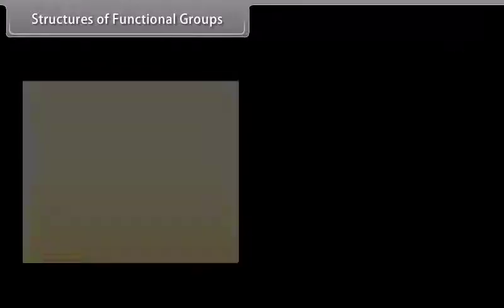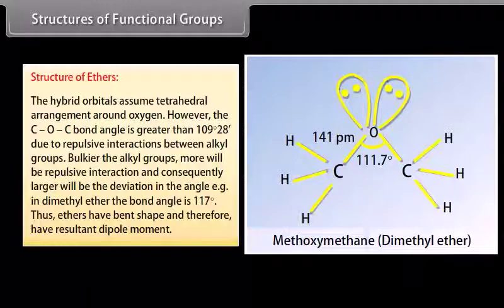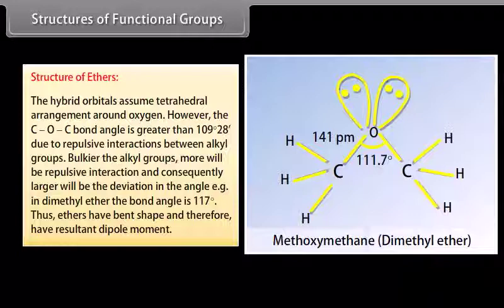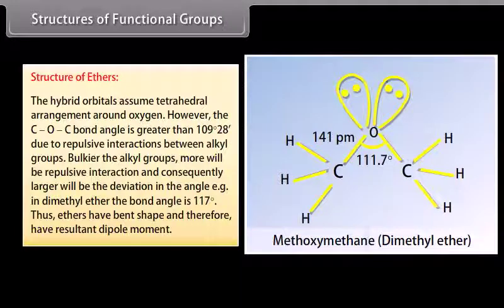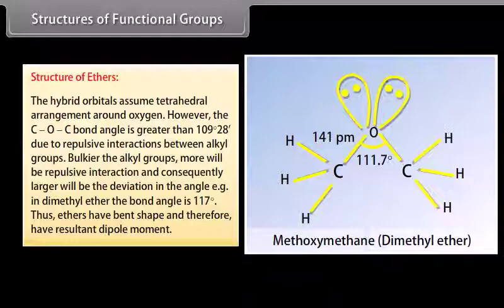The C-O bond length in phenol is 136 picometers, which is shorter than that in methanol due to conjugation of the unshared pair of oxygen with the ring, imparting partial double bond character to the C-O bond. Structure of ethers: the hybrid orbitals assume a tetrahedral arrangement around oxygen; however, the C-O-C bond angle is greater than 109°28' due to repulsive interactions between alkyl groups. In dimethyl ether the bond angle is 117°, giving ethers a bent shape and a resultant dipole moment.